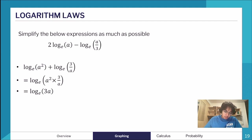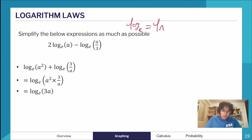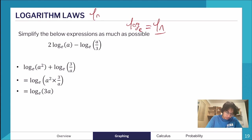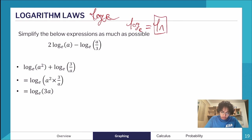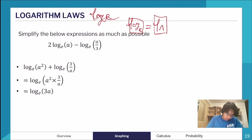Log base e — Euler's number — is written as ln, the natural log. I strongly recommend writing ln rather than log_e, because if the e isn't clearly written it can cost you marks. Anyone will recognise ln as the natural log immediately, and it's just two letters instead of four.